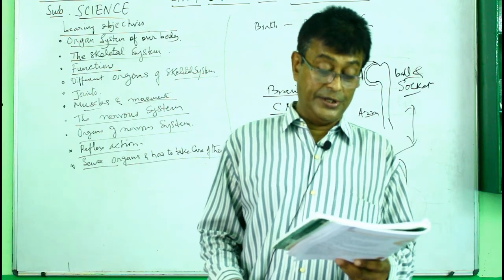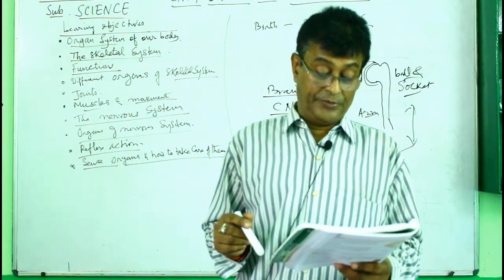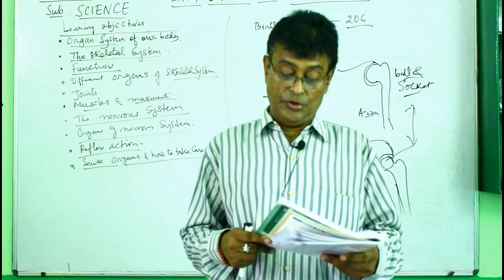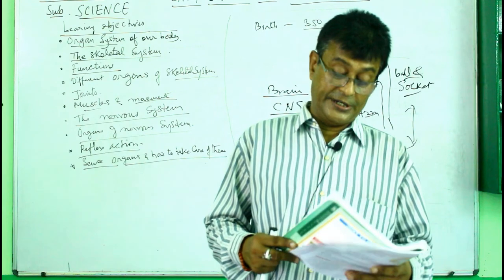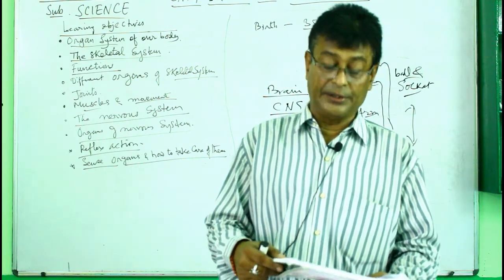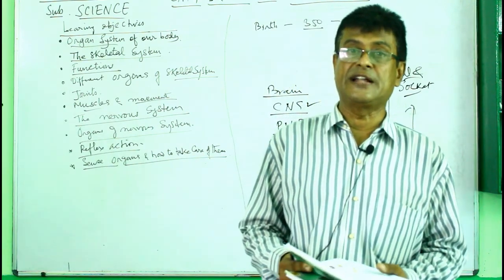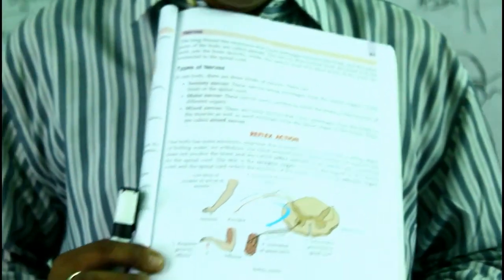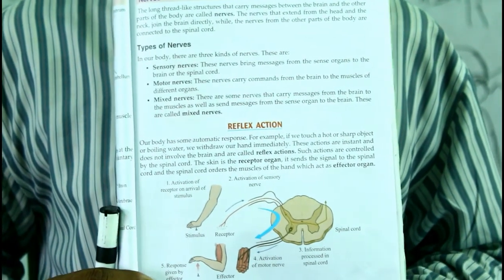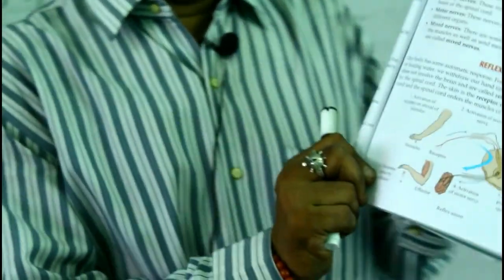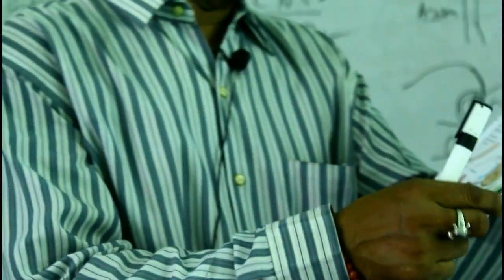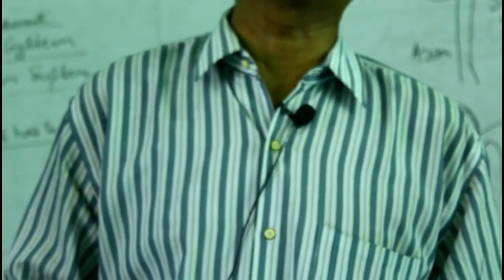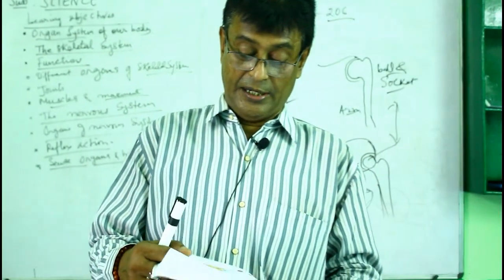The spinal cord looks after the reflex action. The skin is the receptor organ and sends the signal to the spinal cord, which acts on the muscles as the effector organ. There is a diagram to show the reflex arc. In the reflex arc you have all the parts - the skin working as the receptor organ and the hands and muscles as the effector organs.